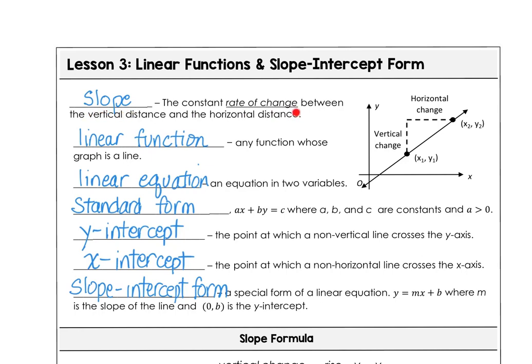We know slope is the constant rate of change between the vertical distance and the horizontal distance. We often say rise over run is slope. You have a linear function when you have a function whose graph is a line. This is our linear function graph here. And we call the equation that corresponds to the graph a linear equation because it will be an equation in two variables, x and y.